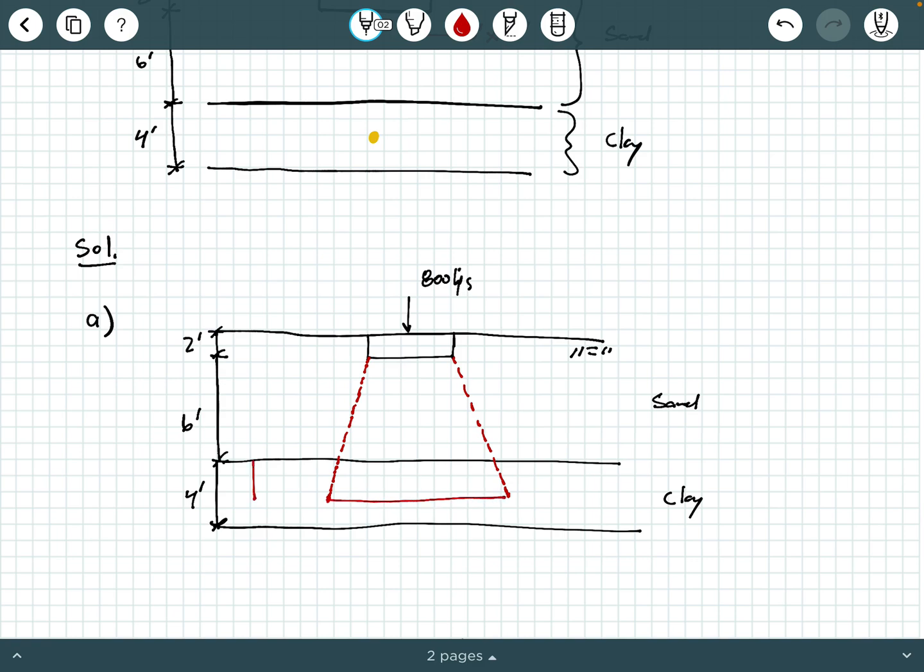Now, here's where you've got to be careful. The projection lines, the 2-to-1 projection lines, where do they start? Well, they start at the base of the foundation, not at the ground surface. So actually, this top 2 feet is not really important to us. So that could be a good trick question. Your projection lines start at the base of the foundation.